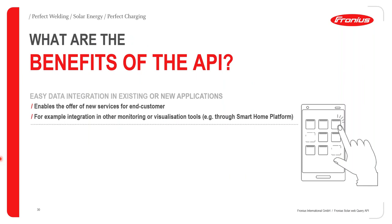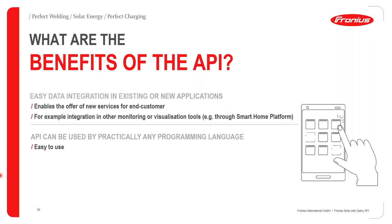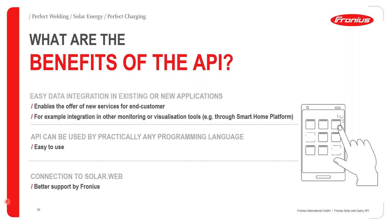The benefits of the API include: easy data integration into existing or new applications, enabling new services for end customers, and integration into other monitoring or visualization tools. The API can be used with practically any programming language, making it extremely easy to use. Because it connects to SolarWeb, users receive the same quality of support from Fronius — tech support can assist with any API or data transfer issues.